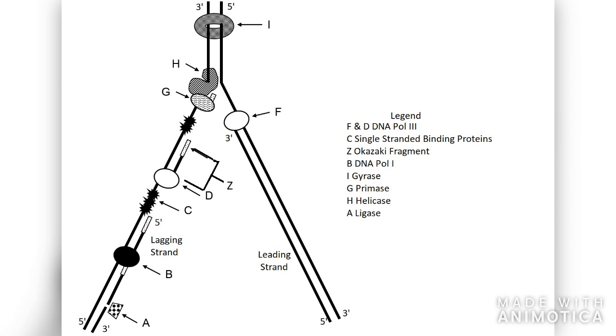Helicase is indicated by the letter H, and it unwinds the double-stranded DNA by breaking the hydrogen bonds between the bases.